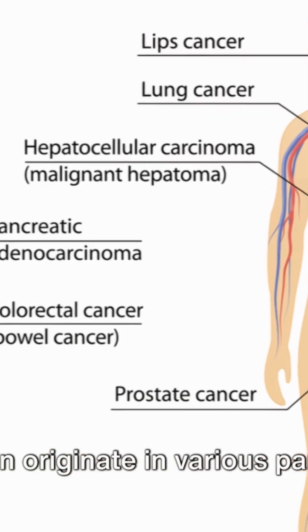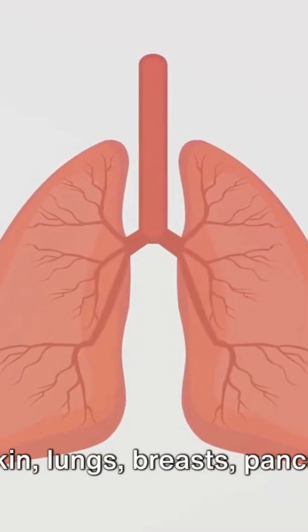Carcinomas can originate in various parts of the body, including the skin, lungs, breasts, pancreas, and other organs and glands.